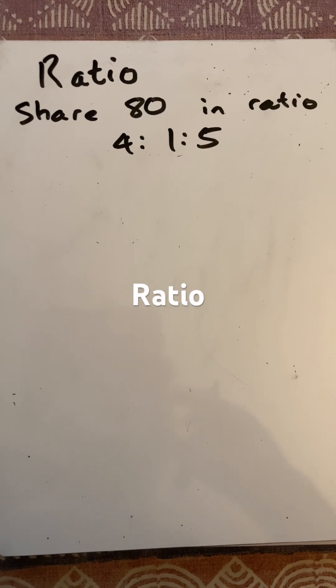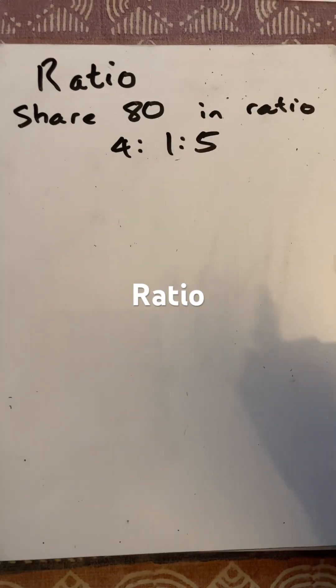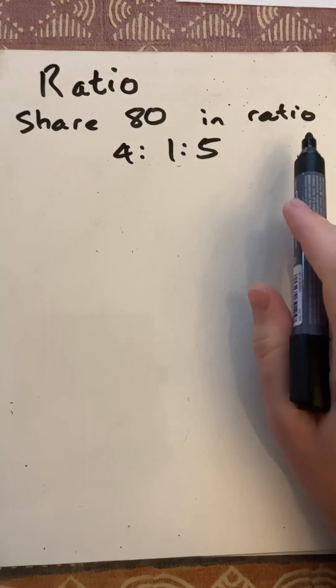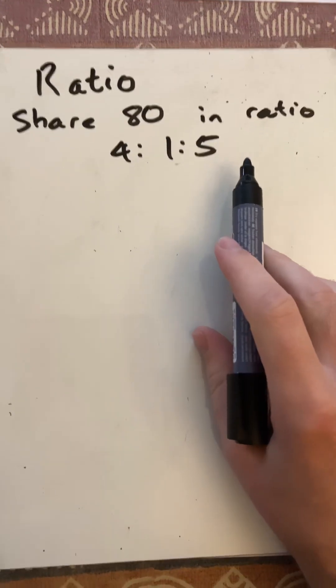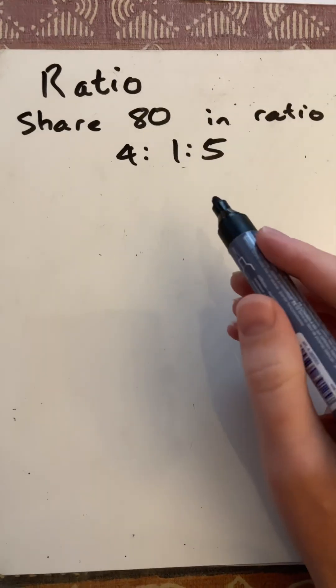Hello and welcome to Martin Math doing a short on ratio. We're going to share the amount 80 in the ratio 4:1:5. I'm going to do this in two different ways.